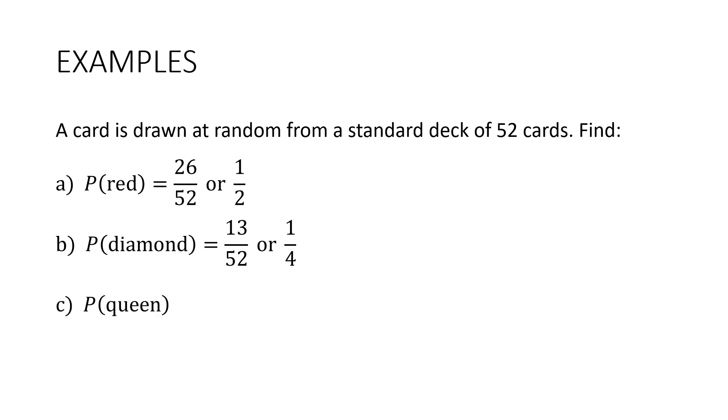What about the probability that it's a queen? How many queens are there in the deck? There are four. So our probability would be 4 out of 52. You can reduce that down to 1 on 13 if you want to.